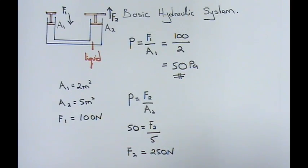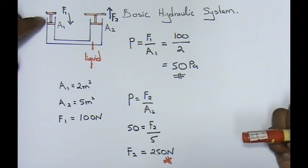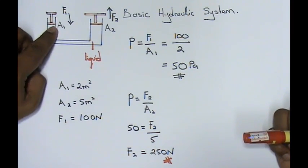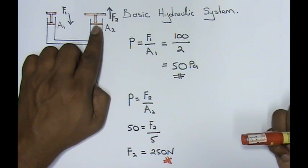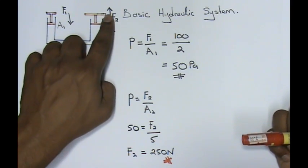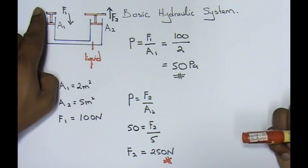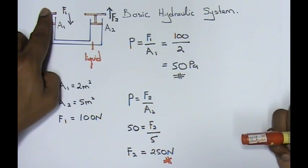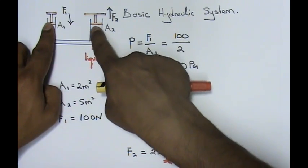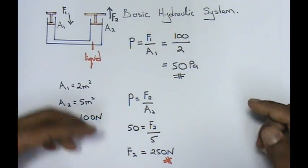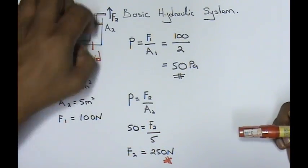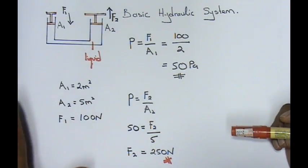Now, this, my dear students, is the good news, the advantage. Now, if you observe, you only apply 100 newtons at F1, but you get back 250 newtons for a larger piston. That means your small force at the small piston gives you a large force at the big piston. Well, it's good. Carrying heavy objects using this concept is good. Now, what is the disadvantage?